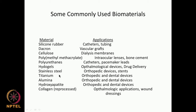Titanium is very biocompatible, used quite a lot in orthopedics, has good tensile and compressive strength, and is used in dental devices like screws. Alumina, as a ceramic or inorganic material, is very biocompatible and used quite a lot in dental devices. Hydroxyapatite — since our bone contains hydroxyapatite — is widely used in orthopedics, is extremely biocompatible, bones grow nicely especially after filling bone defects with it, and it is also used in dental devices and facial surgery. Collagen, derived from animals but reprocessed, is used in wound dressings and ophthalmological applications.